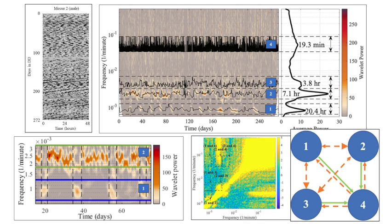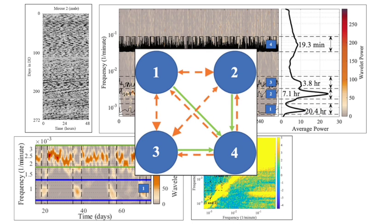Coupling analysis demonstrated strong and stable phase coupling from all slower oscillators to the faster 19-minute oscillator, and weak and less stable phase coupling in the reverse direction and between the slower rhythms, indicating energy transfer between oscillators.